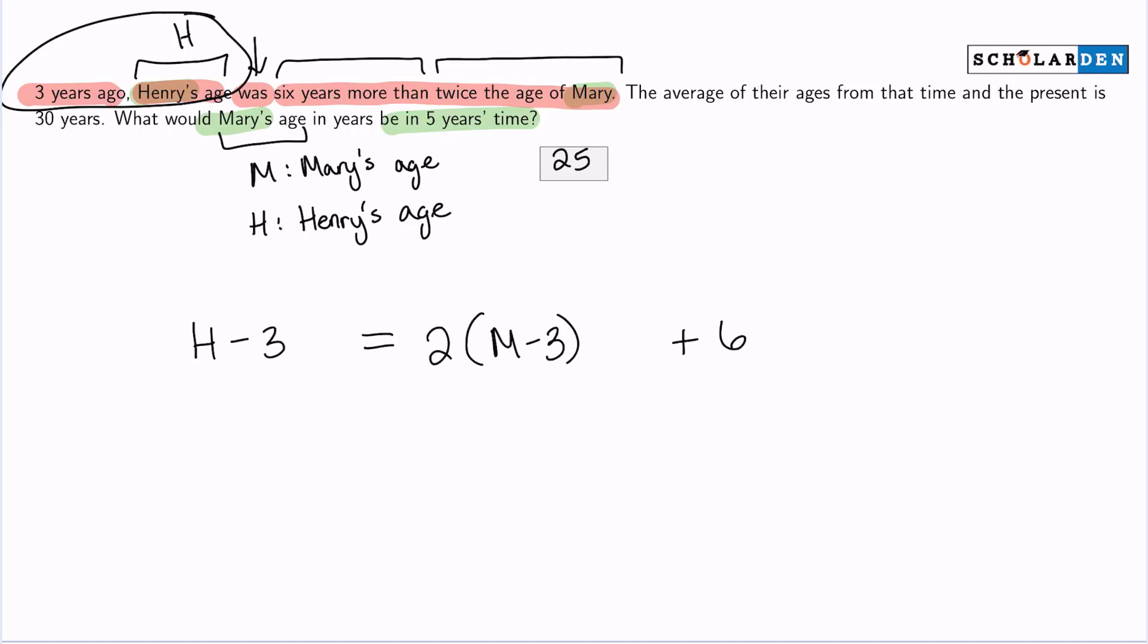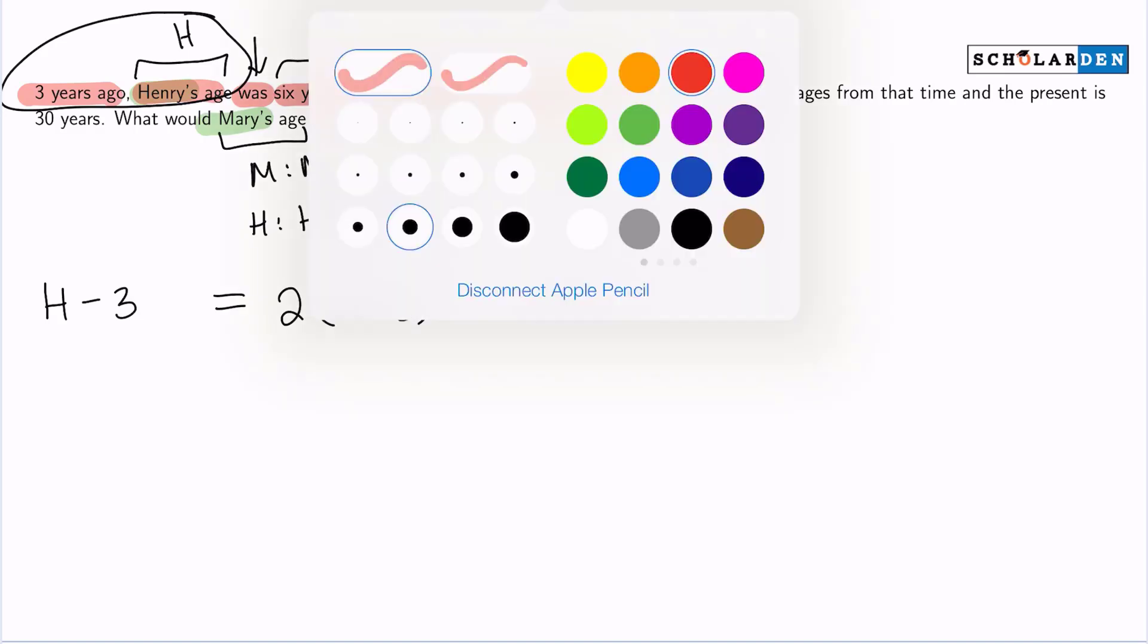Now, there we have it. This is one equation. Let's find another equation, because if I'm trying to find how old Mary's going to be in five years, I can't do that with one equation because we have H and M, two variables. I need more information.